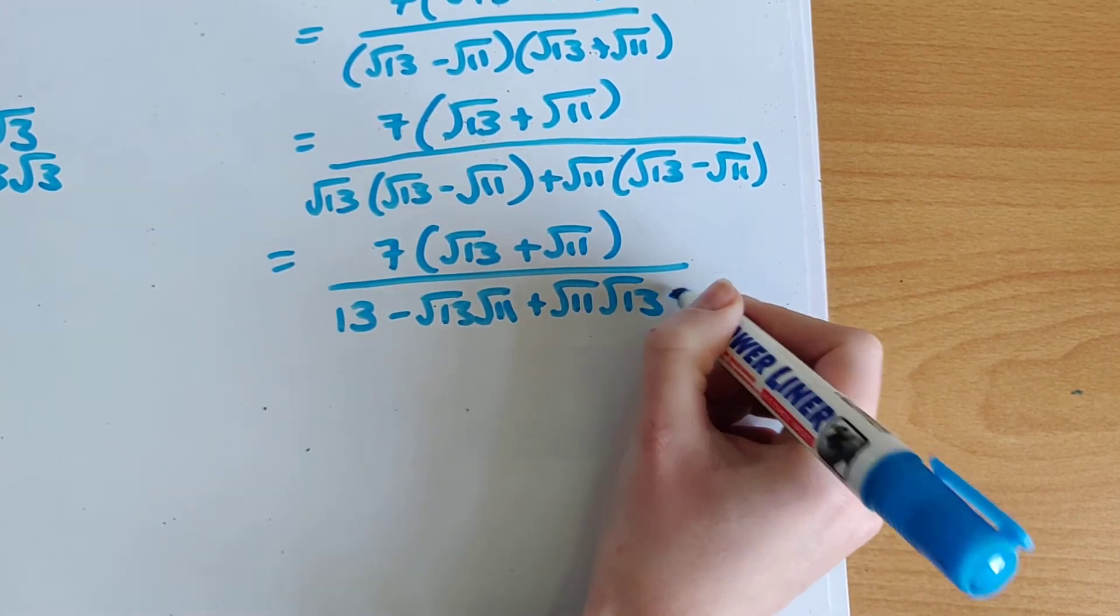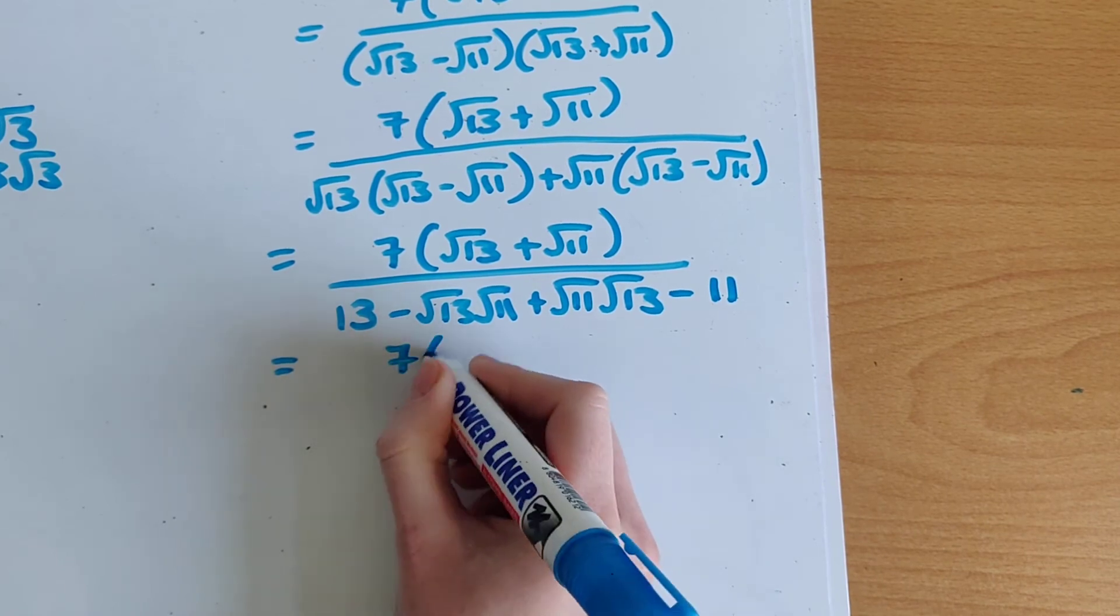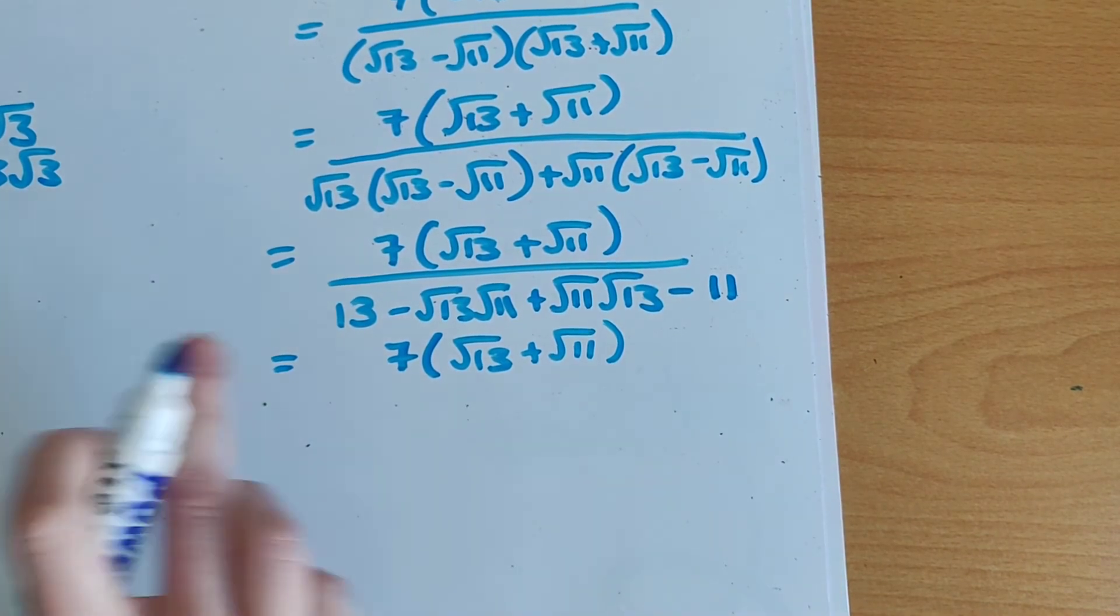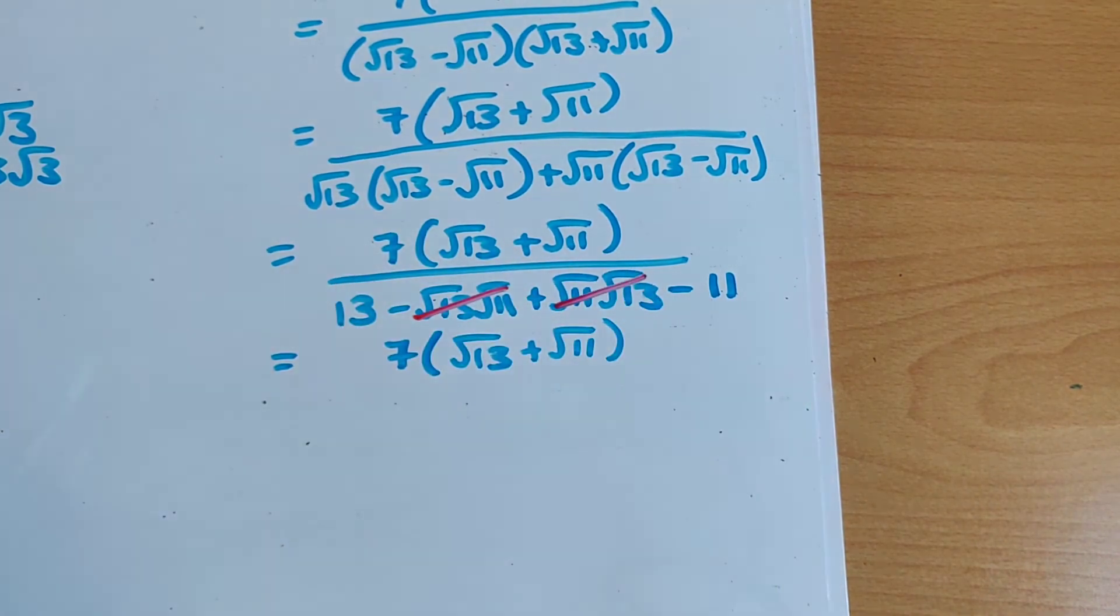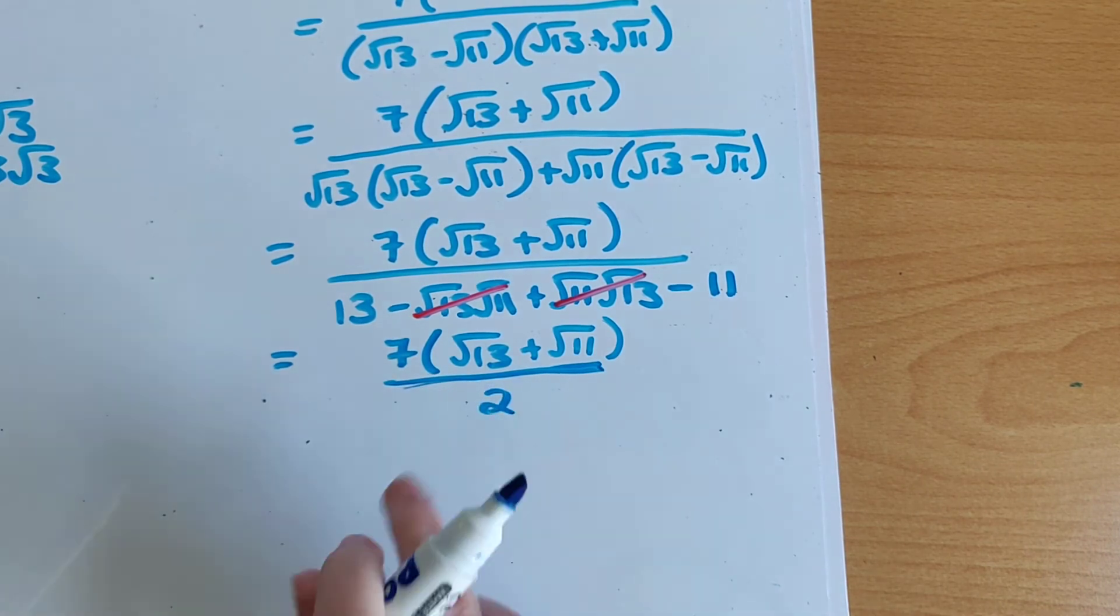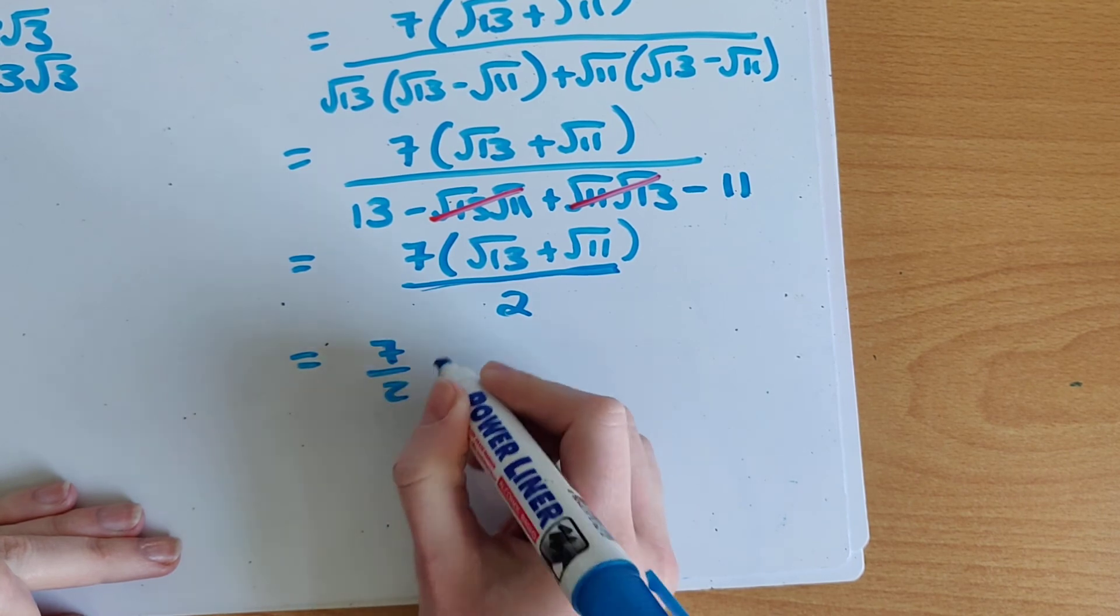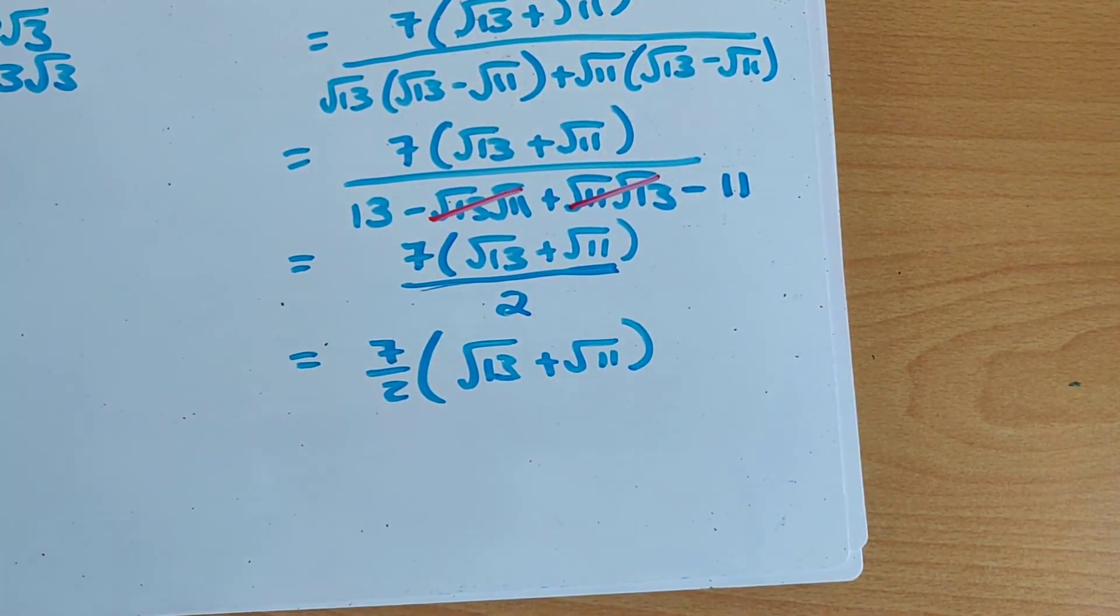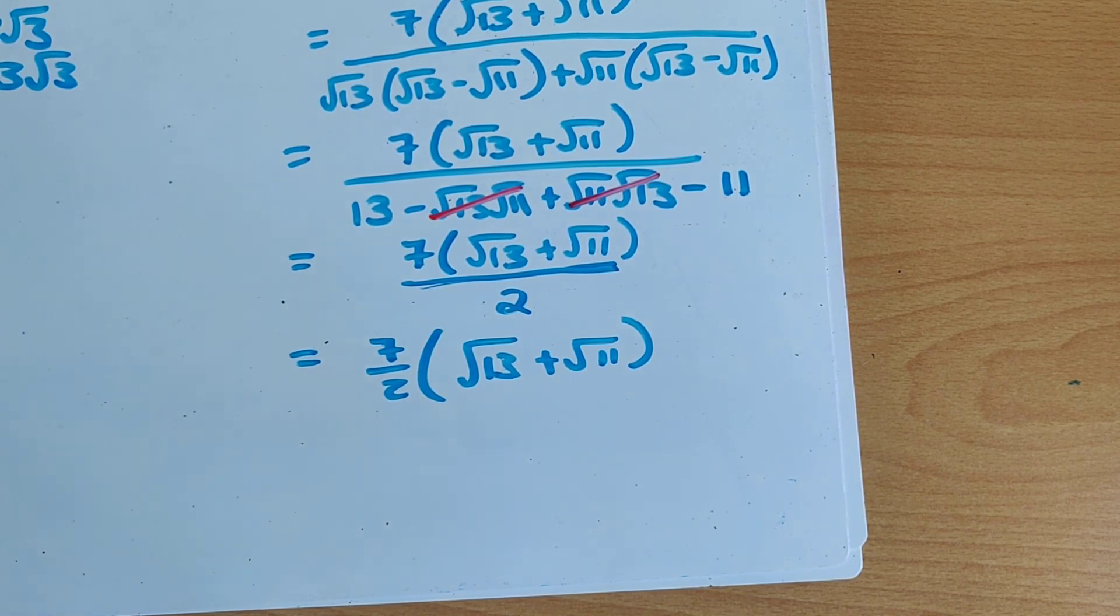Plus by minus gives me a minus. And root 11 by root 11 gives me 11. So on top I still have 7 root 13 plus root 11. On bottom I can now see that my minus root 13 root 11 and my plus root 11 root 13 are going to cancel. Which leaves me with 13 minus 11 which is just 2. And so this guys is my final answer. Or it can be written as 7 over 2 by root 13 plus root 11. But both are completely acceptable. Okay so take a minute, go back over the video, try a few questions and let's move on. Thank you.